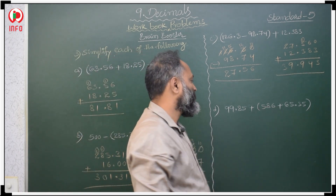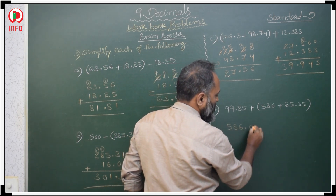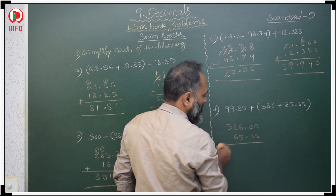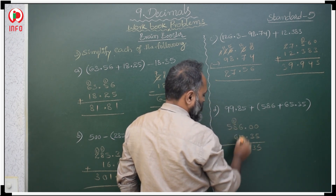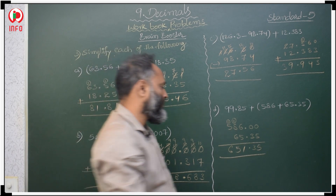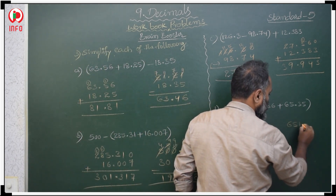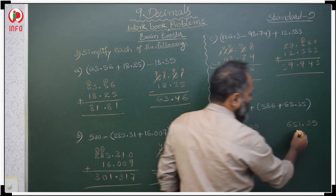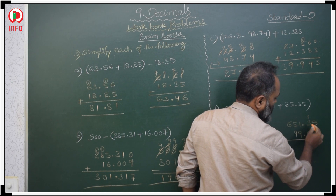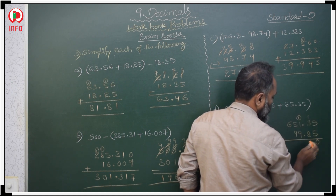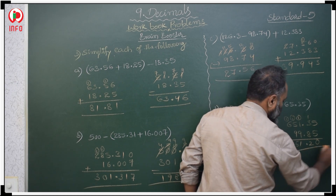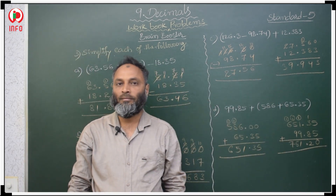Next, first add 586 plus 65.35. 586 has no decimal so write 586.000. 0 plus 5 is 5; 0 plus 3 is 3; carry: 11; carry: 15, 6; sum is 651.35. Then add 99.85 to 651.35 to get the final result of 751.20.